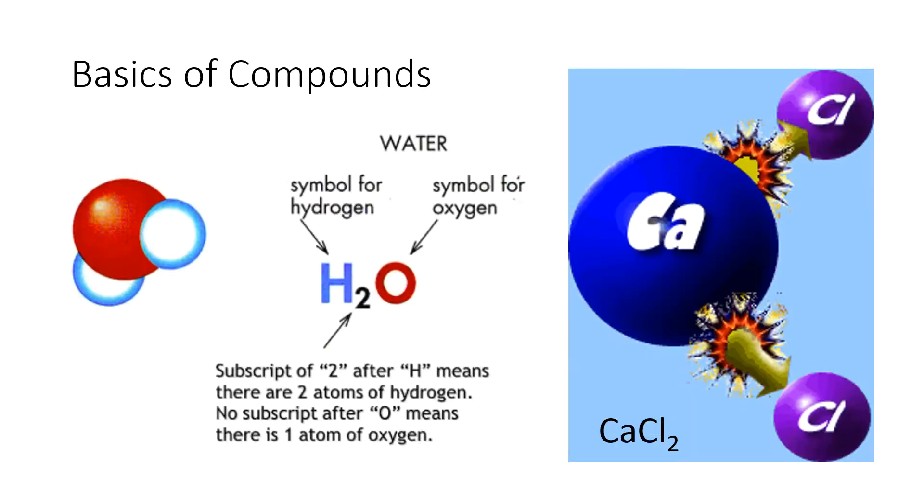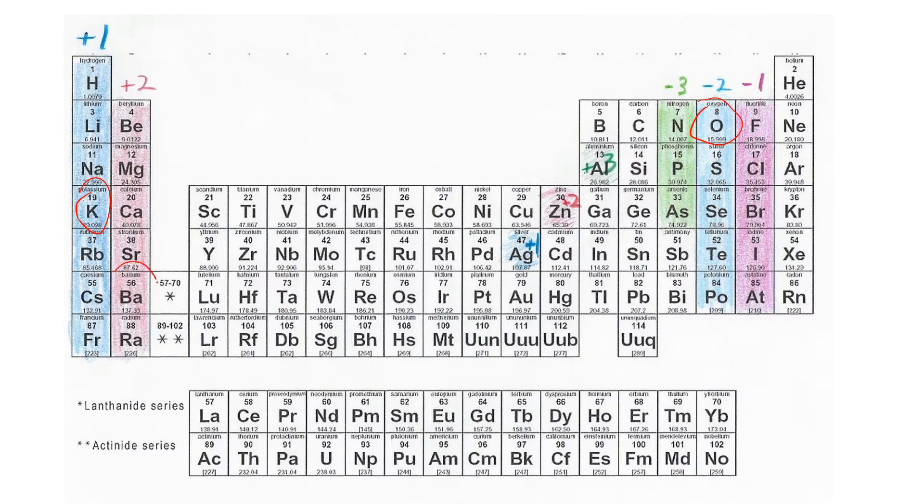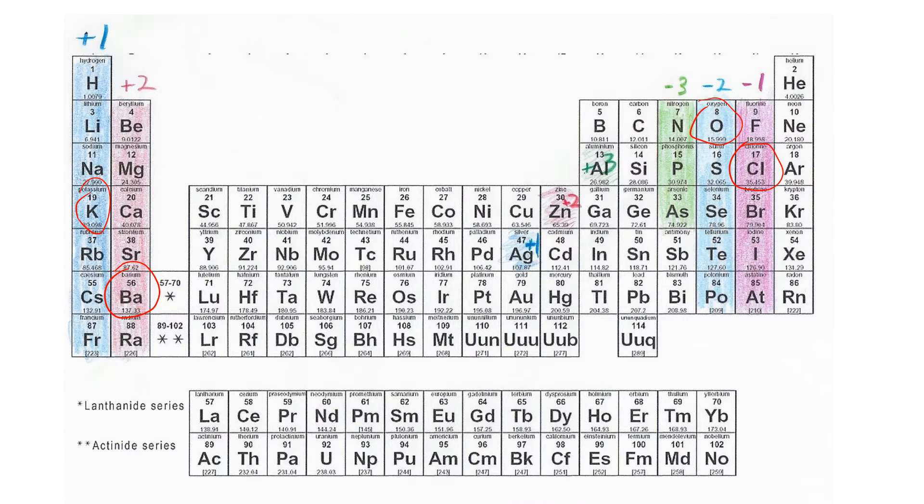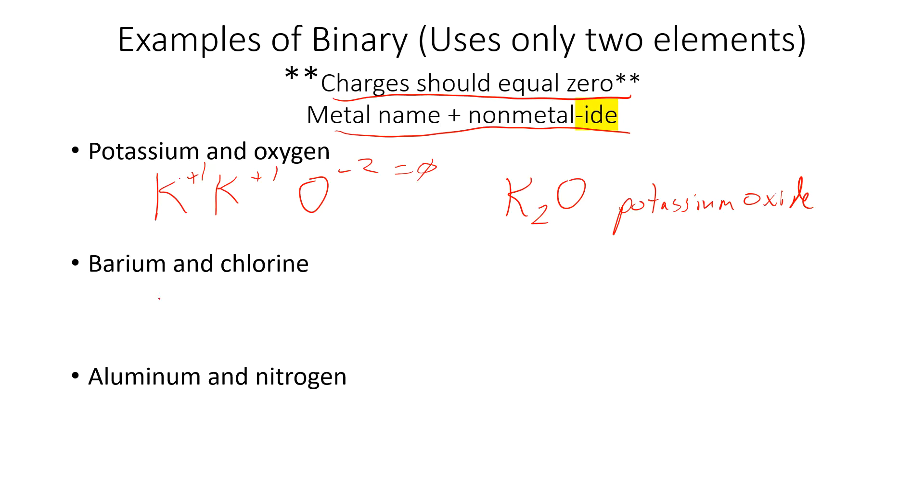All right, so barium and chlorine. Barium is right here, which is a plus two charge. Chlorine is right here, and it's a minus one charge. So we got barium with a plus two, and chlorine with a minus one. Plus two minus one is still plus one, so that's not the zero we're looking for. We need another chlorine. And now plus two minus one minus one equals zero, and that's BaCl2. We call that barium, which is the name of the metal, and then chloride, which is the name of the nonmetal with an -ide ending.